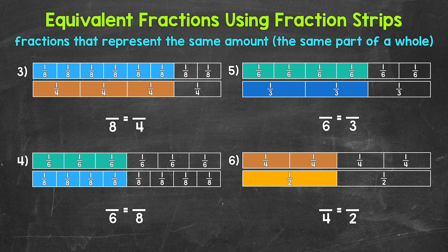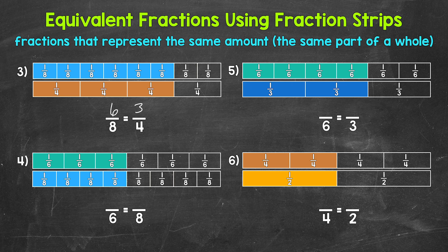Let's look at number three, where we have a top fraction strip divided into eight equal parts and six are shaded — so that's six eighths. That's going to be equivalent to how many fourths? The bottom fraction strip is divided into four equal parts and three are shaded. So six eighths is equivalent to three fourths. Both fraction strips are showing the same amount, the same part of the whole rectangle.